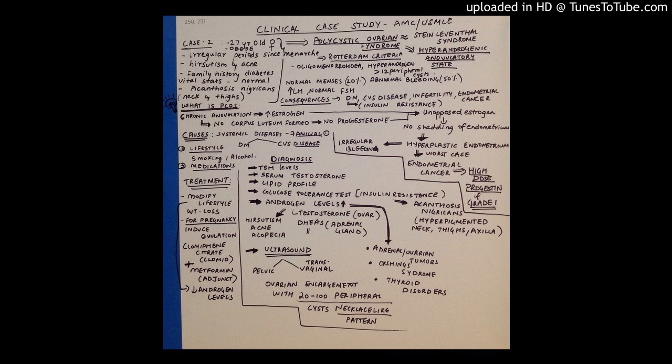So if this endometrium gets thicker and thicker and gets more hyperplastic, you have irregular bleeding which is one of the consequences. In your worst case scenario, it also leads to endometrial cancer. Suppose you have a patient who comes to you and it has led to endometrial cancer and you've detected it in the very early stages, in grade one stages. What will be your first line of treatment? The first line of treatment would be a high dose of progestin, because the issue is with no progesterone. High-dose progestin can be used in this grade one endometrial cancer for treatment.